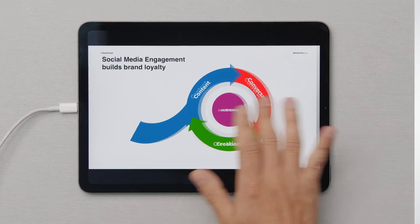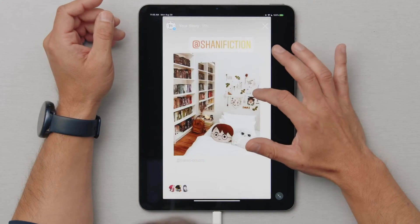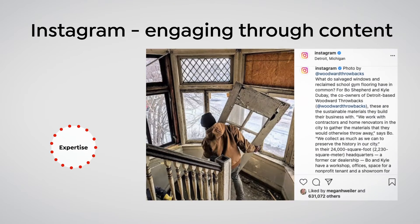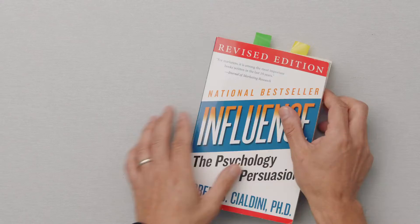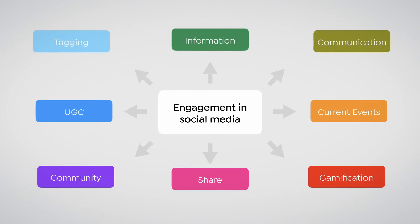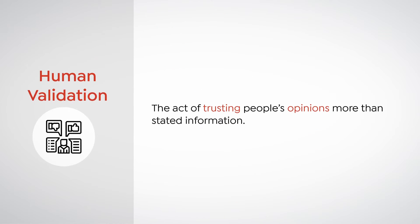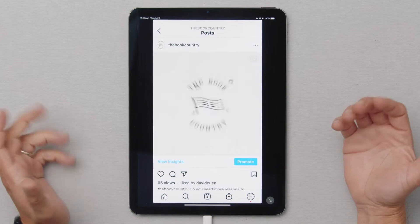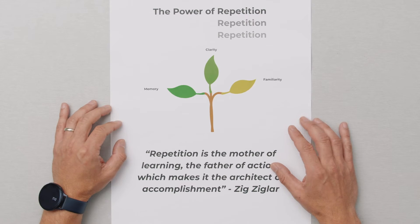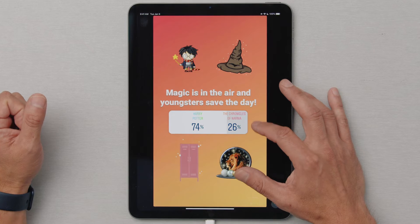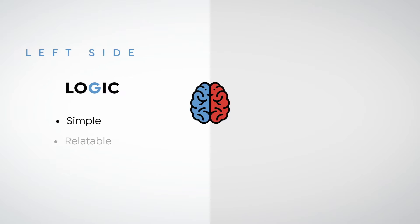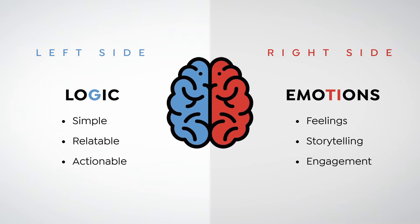We will start by defining the concept of engagement and how I have approached it in the past. Then, you'll analyze the principles that encourage people to interact with your content, regardless of social channels and languages. After that, I will show you some techniques to make your content memorable. I will teach you as well how to appeal to the so-called left side and right side of the brain.